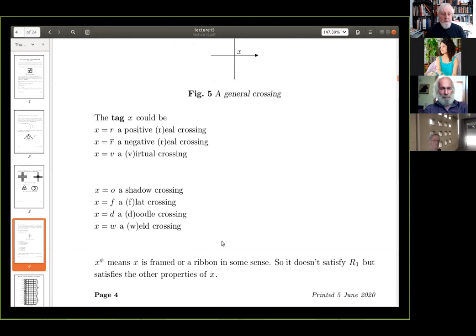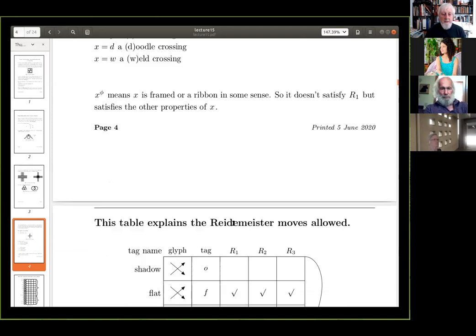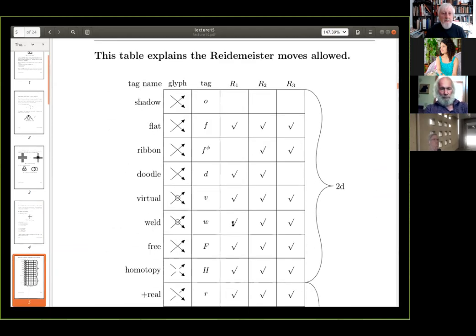And then you could have a flat crossing, or a doodle crossing, or a weld crossing. And a weld is similar to a virtual, but it's a bit different. And because we have this algebra, we can talk about lots of things at once, which is the whole point of algebra. And I've had to alter these notes, because Colin pointed out something this afternoon, that I should talk about framed knots. So, X with the phi above means X is framed. So, it's a new notation I've invented today. I might change it sometime. I don't know. So, it doesn't satisfy the first Reidemeister move, but satisfies the other properties of X.